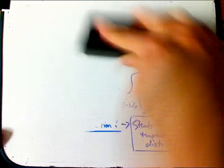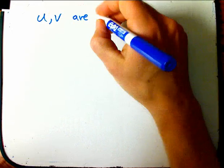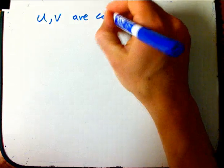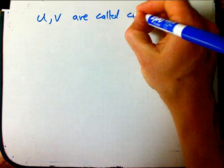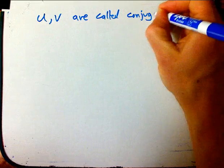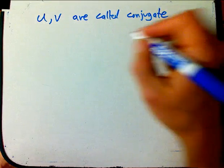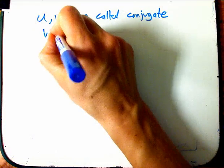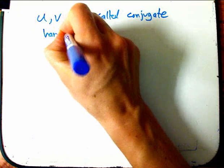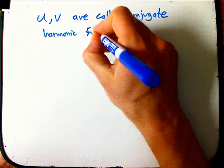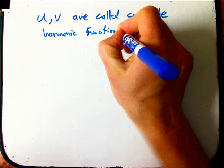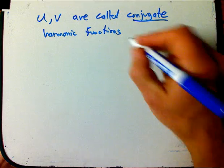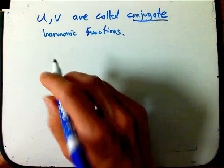Let me give you the terminology and just give you one of the consequences — a very geometric consequence. So U and V, in this situation, are married to each other. They're called conjugate harmonic functions.